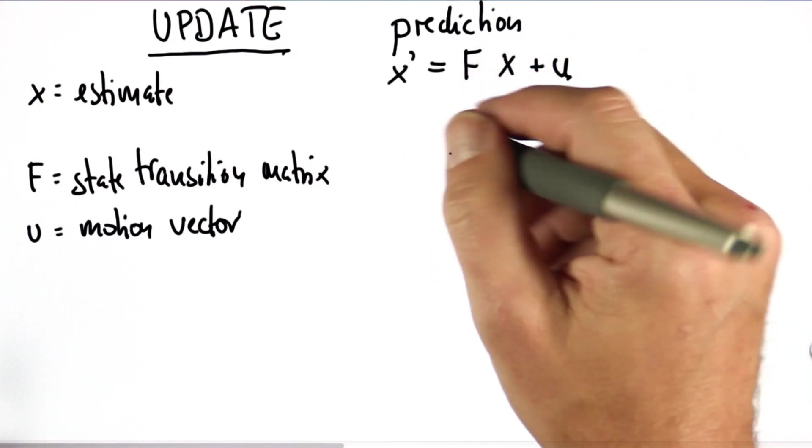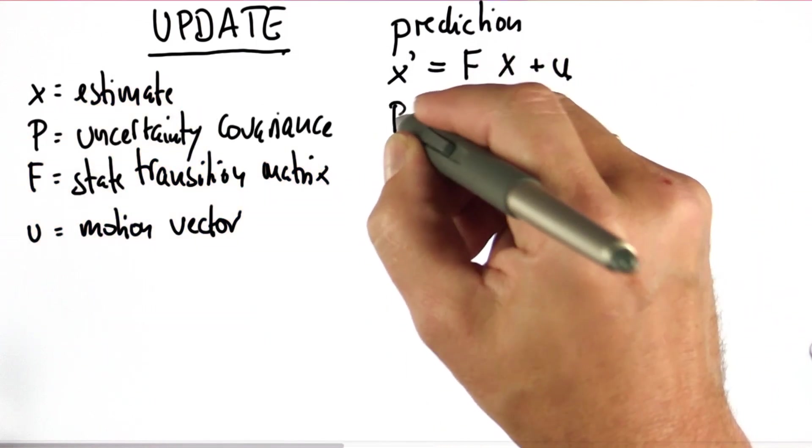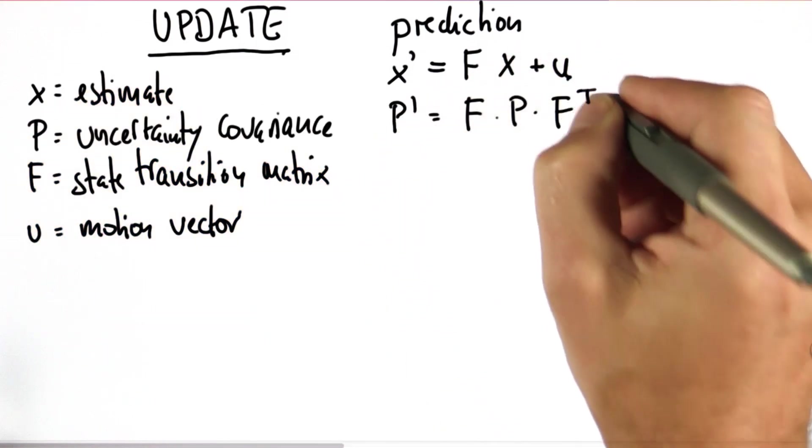I also have a covariance that characterizes my uncertainty, and that is updated as follows, where t is the transpose.